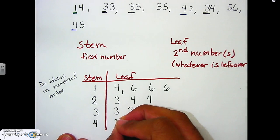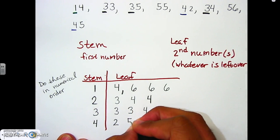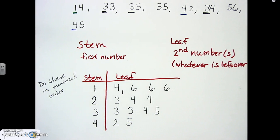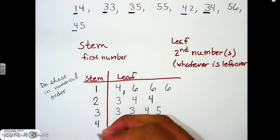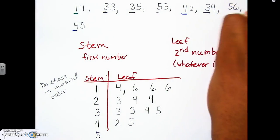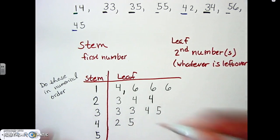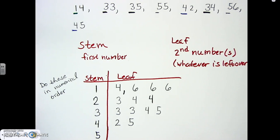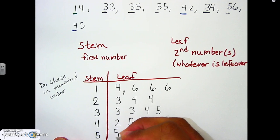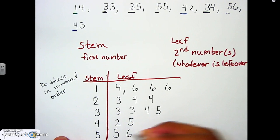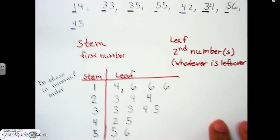Now the last group — the fives. As you can see, I ran out of space so I continued going down. We go ahead and put those in: stem is 5, and the leaves are 5 and 6. And that's it for filling in the plot.